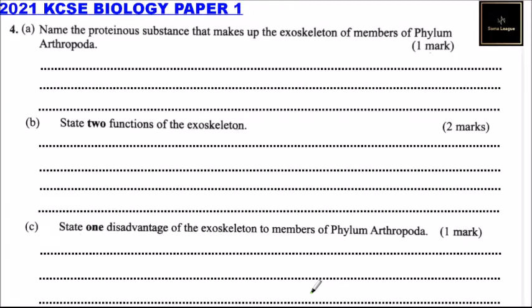Question number four, part A: Name the protein substance that makes up the exoskeleton of members of phylum Arthropoda. The protein substance is called chitin.